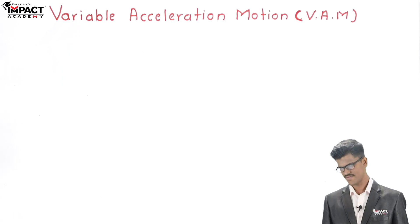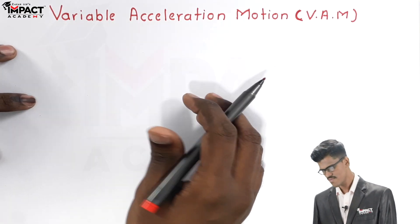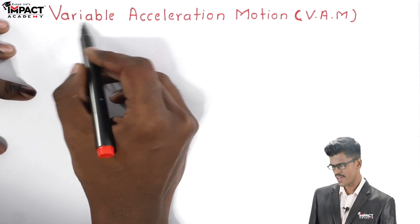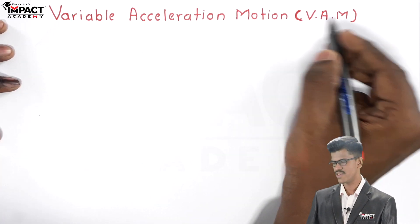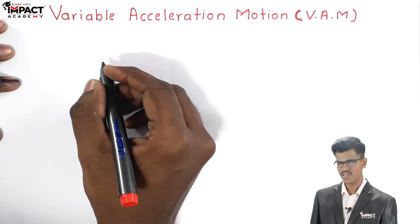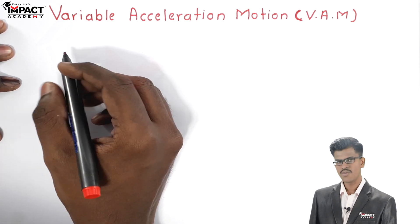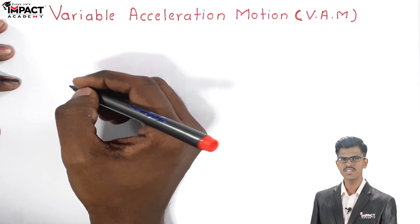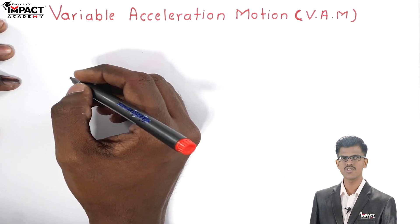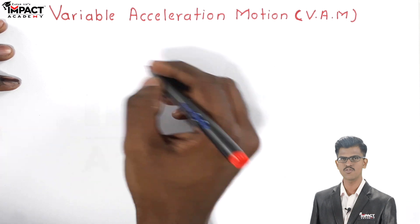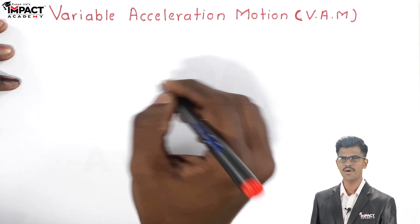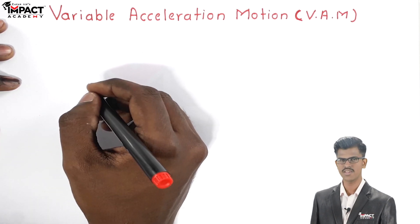Hello friends, today we see what is a variable acceleration motion. So let's start. In the previous video, we saw what is uniform velocity motion and what is uniform acceleration motion.